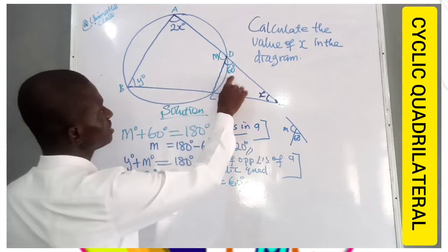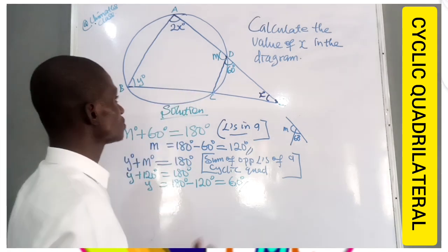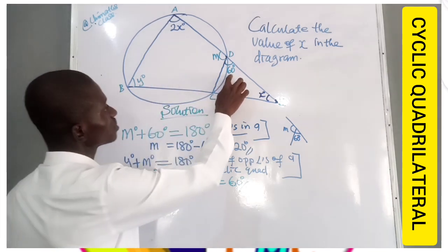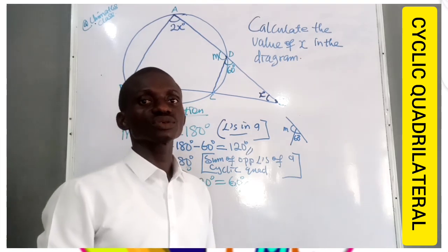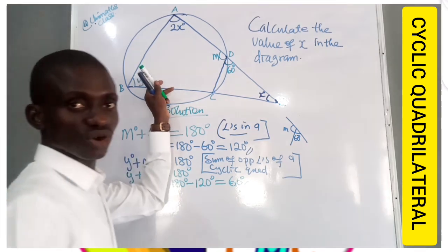Y, this usually is an exterior angle to this cyclic quadrilateral. So we can easily say Y is equal to 60 degrees. Reason is the exterior angle of a cyclic quadrilateral is equal to opposite interior angle.